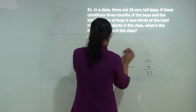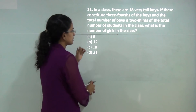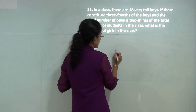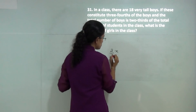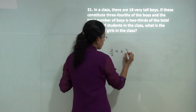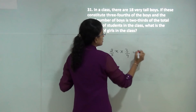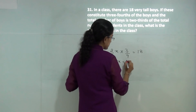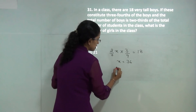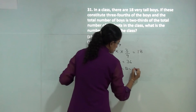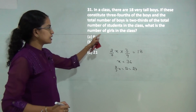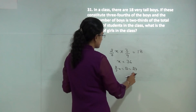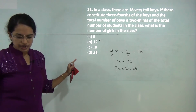This question is a bit tricky. Let the total number of students be x, so number of boys is 2/3 x. Of these boys, 3/4 are very tall and those are 18 in number. Solving this gives x equals 36. So 2/3 of 36 gives 24 boys. Number of girls equals total minus boys, so 36 minus 24 equals 12. So 12 is the answer.